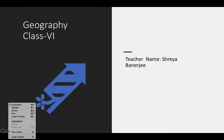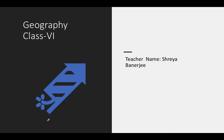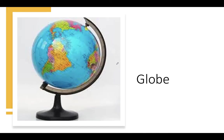Hello everyone. This is your first chapter and the name of your first chapter is Maps and Diagrams. In this chapter, the first thing you have to understand is a globe.